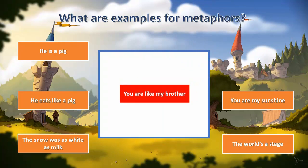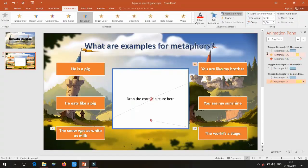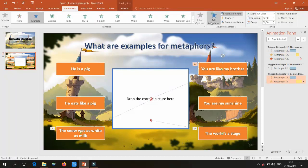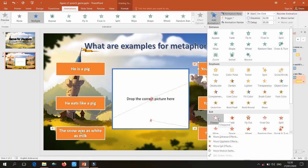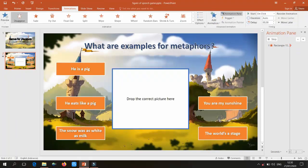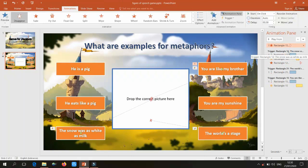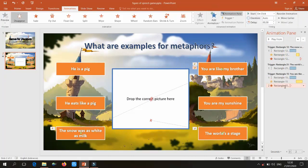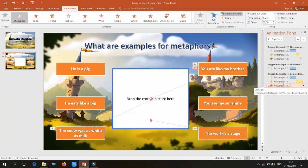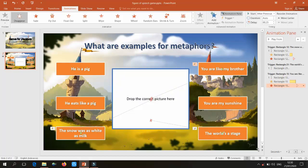Once it moves into the box and changes color, I want it to disappear. Add another animation — in the Exit options select the Disappear animation. Drag it below the other two animations in the pane and set it to After Previous. You can also add a delay so the disappearance happens more slowly.